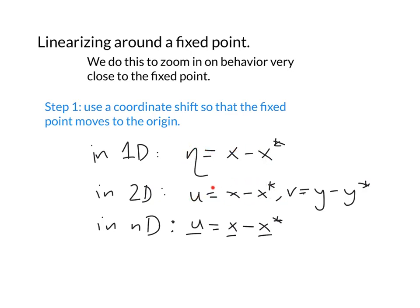In 2D I do the same thing but my fixed point has two coordinates, so I need to create two new coordinates: u, which is the shifted x, and v, which is the shifted y. In general, in n dimensions, I can use vector notation to say all components of my coordinates are getting shifted to the fixed point.